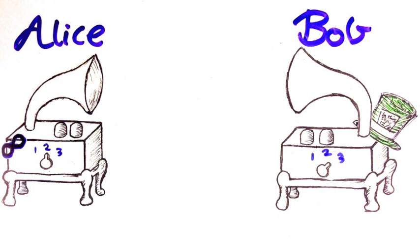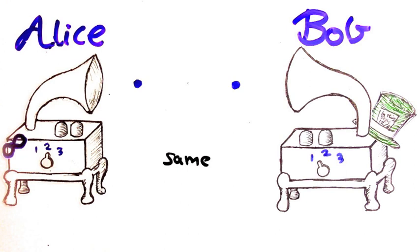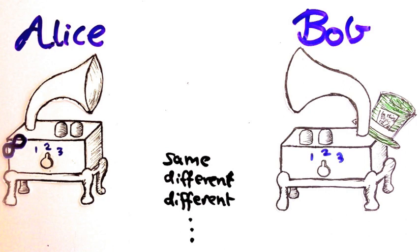If the machines measure their electron to be spin up, then they flash red, or if it's spin down, they flash white. Someone notes if the two machines have the same colour or not. This experiment is repeated many times. The question is, what fraction of the time will the colours be different?